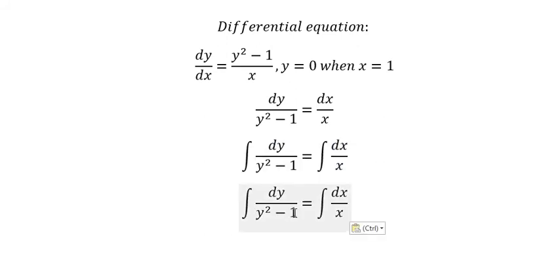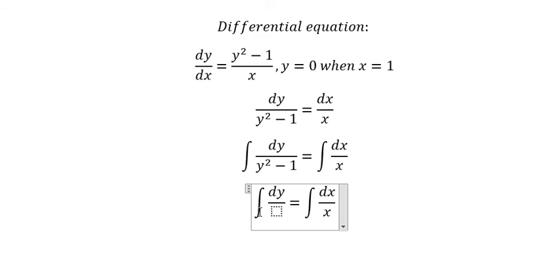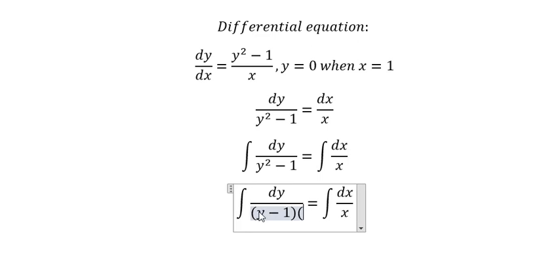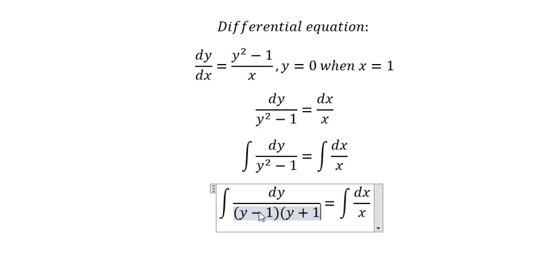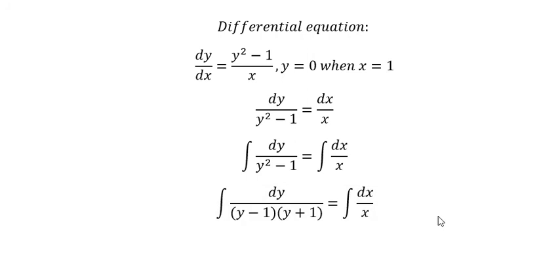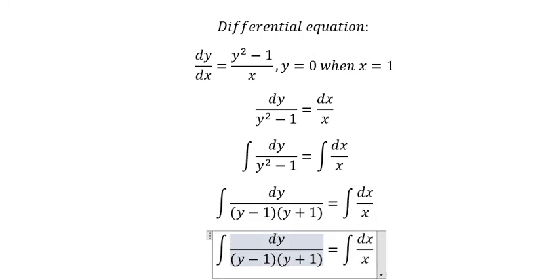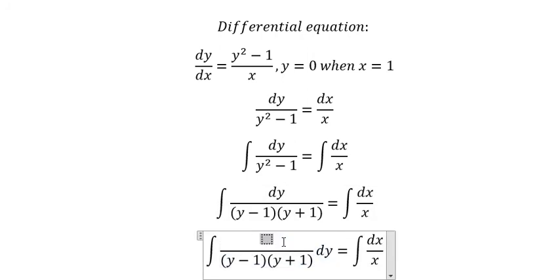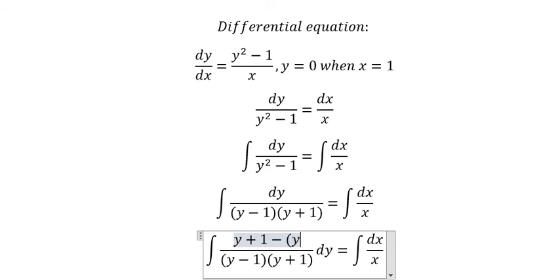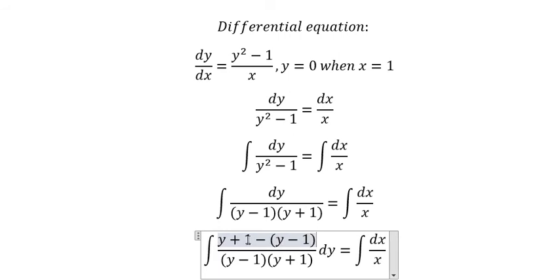For this one, we need to put y minus 1 multiplied with y plus 1. We put dy in here. So I will put y plus 1 minus y minus 1, because we have negative with negative number 1, which gives positive number 1.